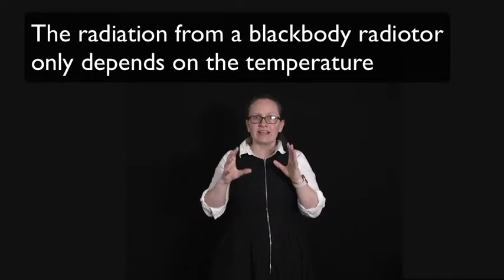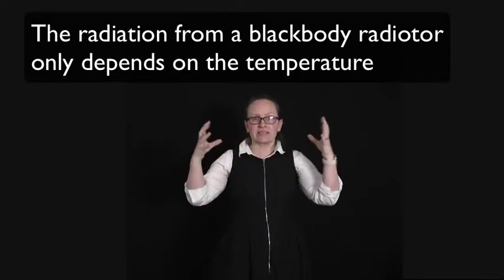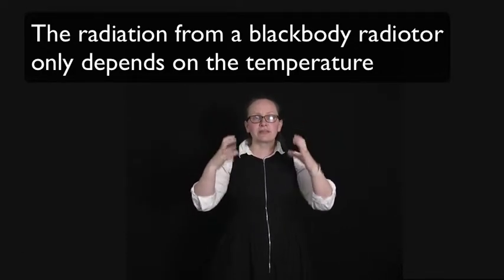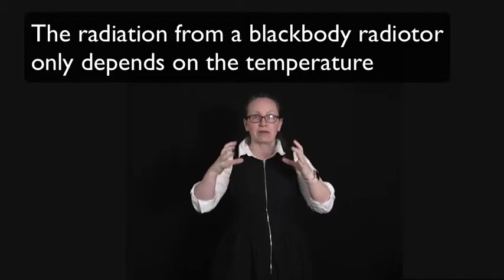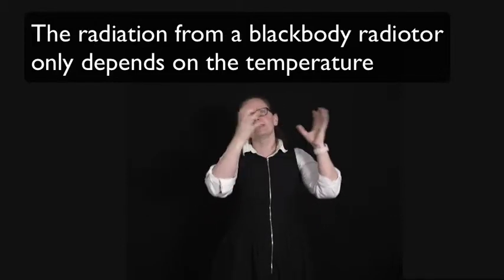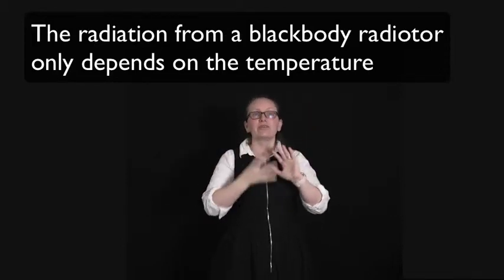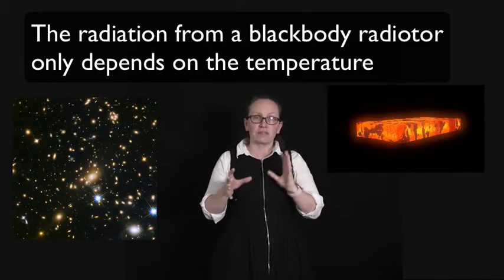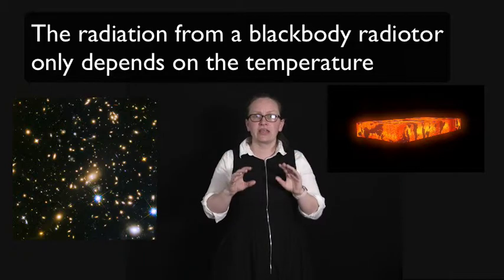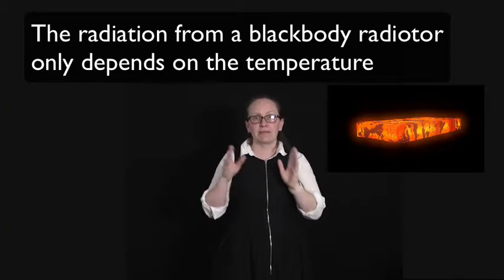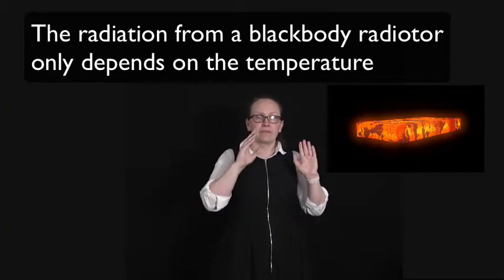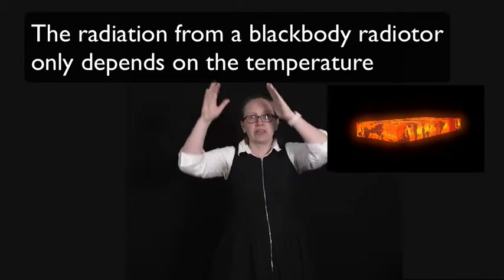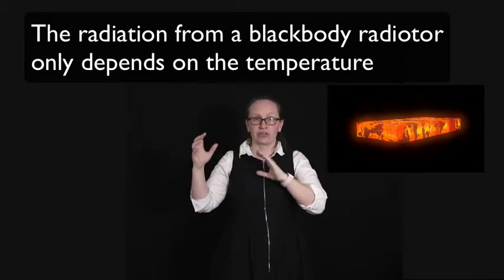A blackbody radiator is something which radiates radiation which just depends on the temperature of that body. Stars are considered fairly good blackbody radiators. A lump of metal is an approximate blackbody radiator. If you imagine a blacksmith heating up a lump of metal it goes from being red hot to orange hot to yellow hot as it gets hotter and hotter.